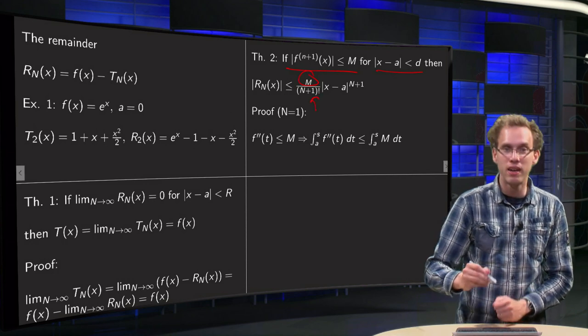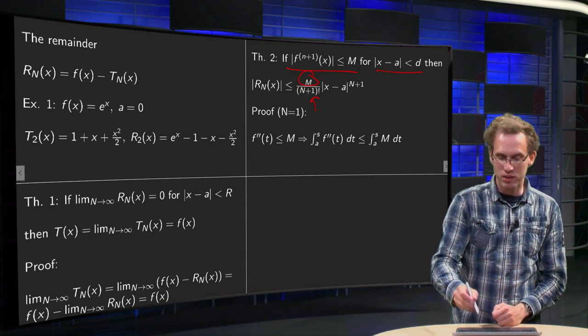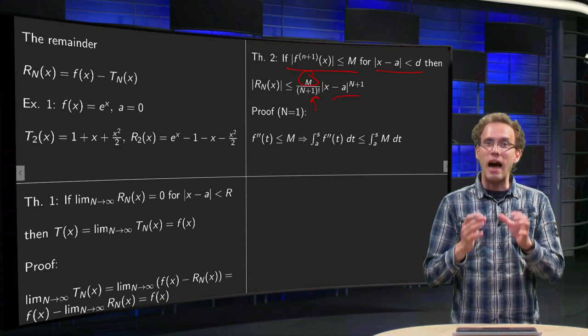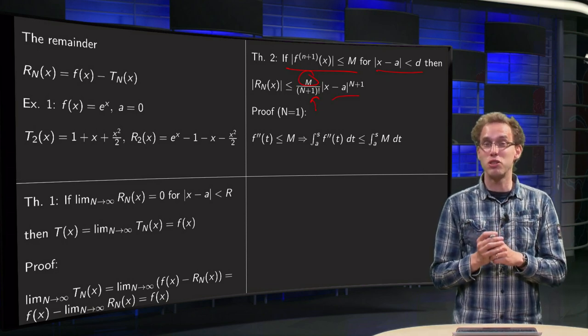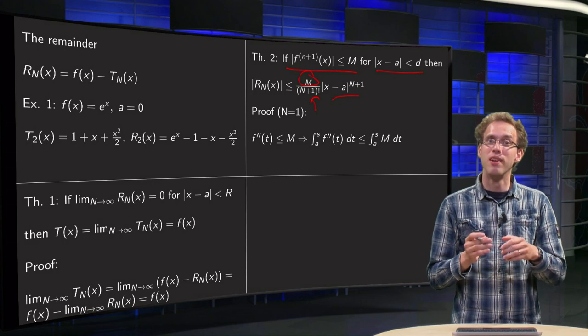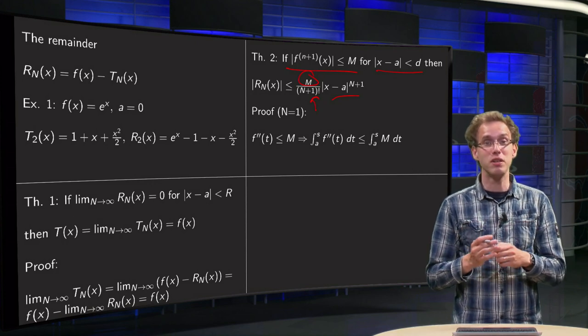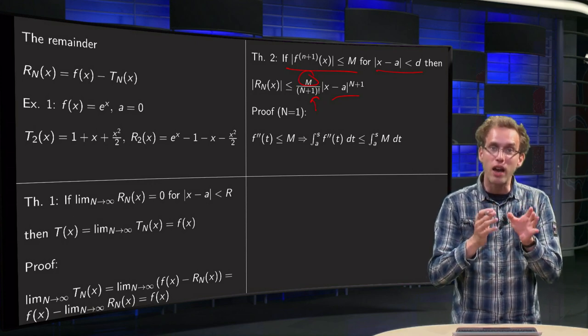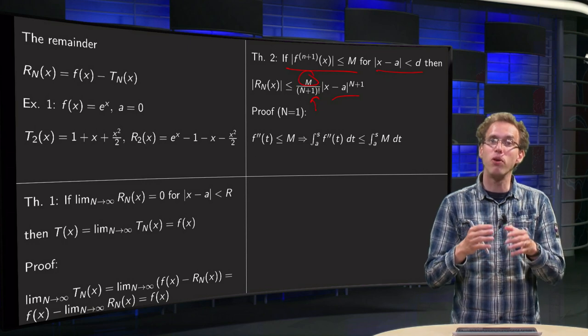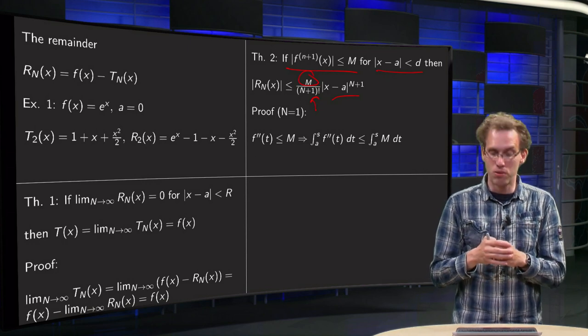Then you know something about your remainder. It's smaller than or equal to capital M, so that has to be some finite value, divided, and this is nice, divided by n plus 1 factorial times this power over here.